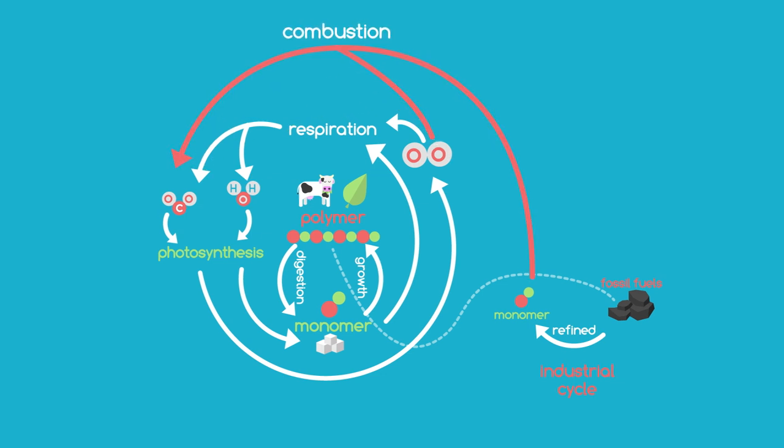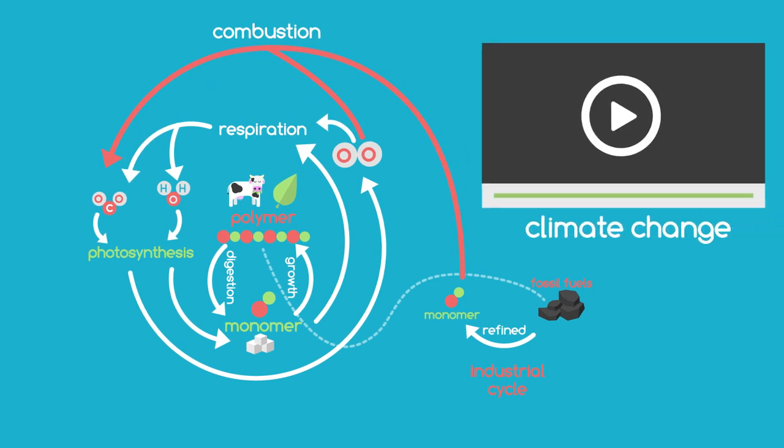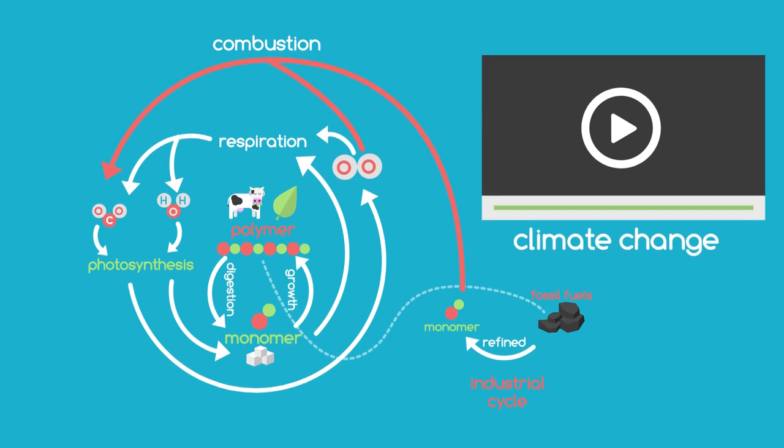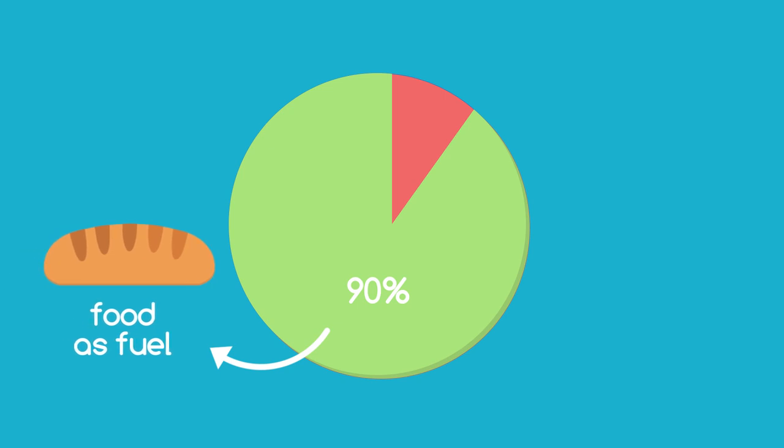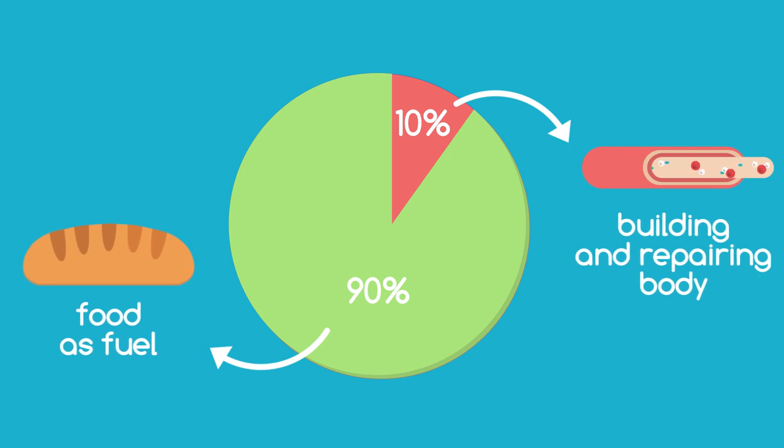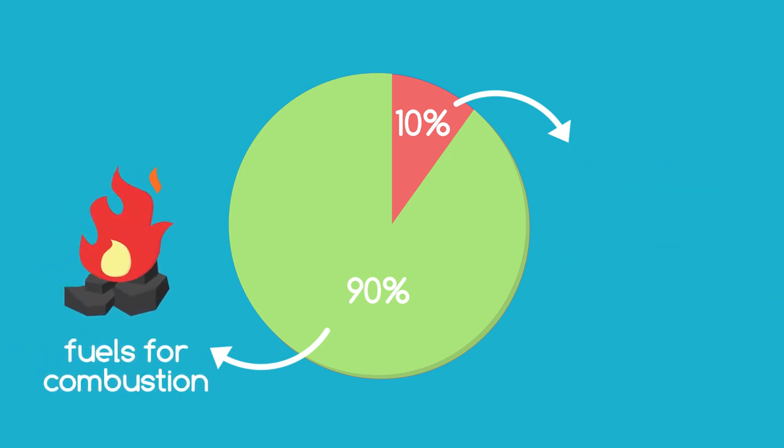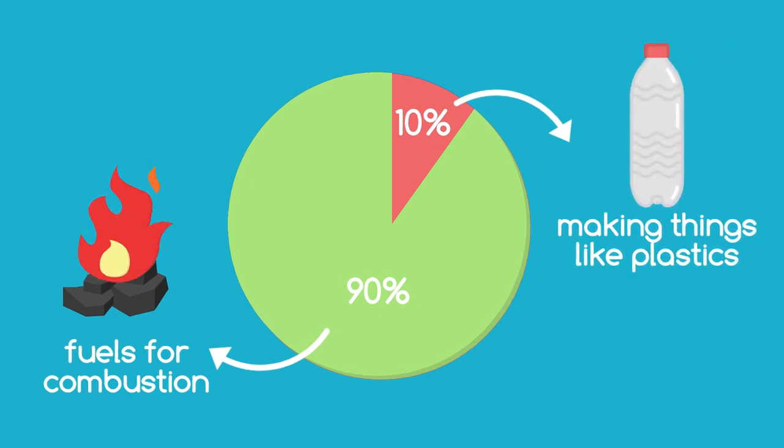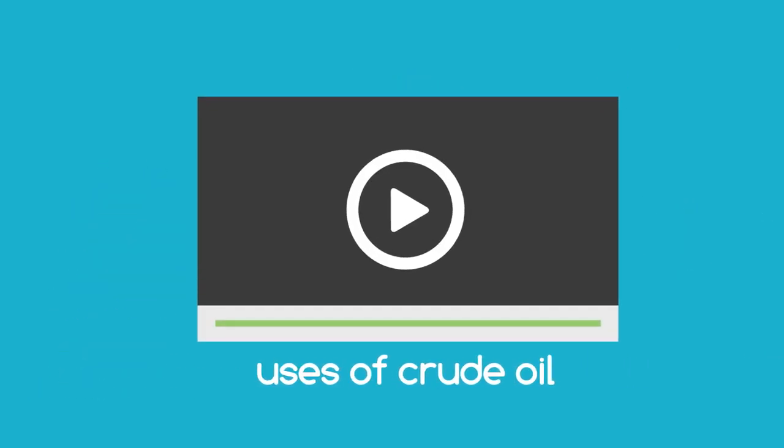You need to view the video on climate change, Environment 30, to explore the problems this is causing for our planet. Just as we use 90% of our food as a fuel and only 10% for building and repairing our bodies, so with fossil fuels, 90% are used as fuels and are combusted, and only 10% are used to make things such as plastic. See the linked video on the uses of crude oil.